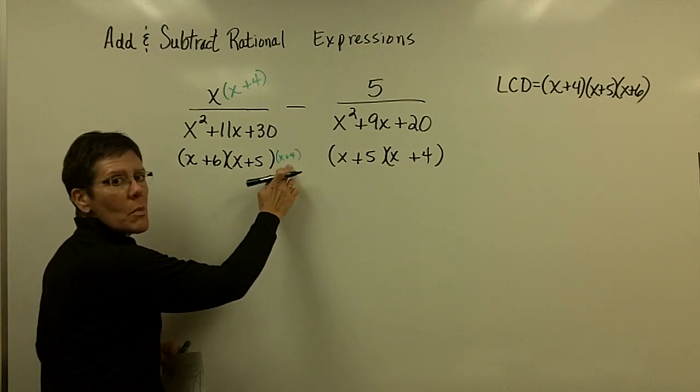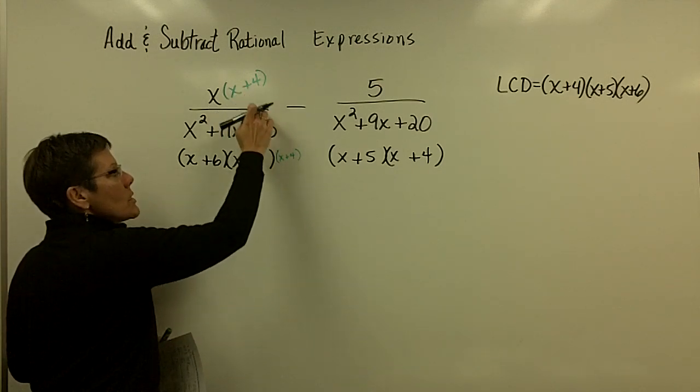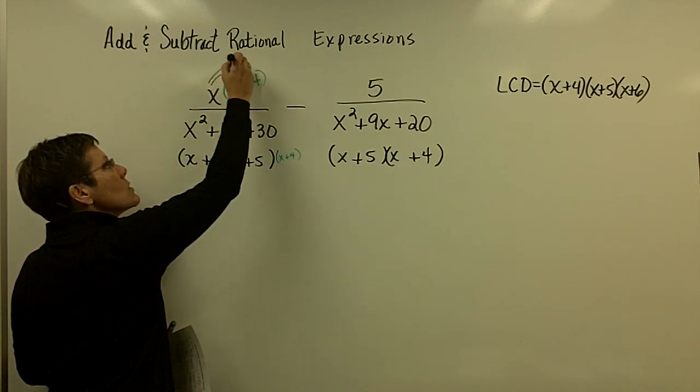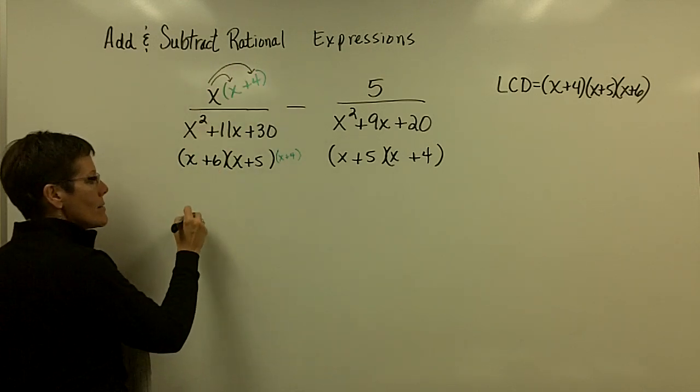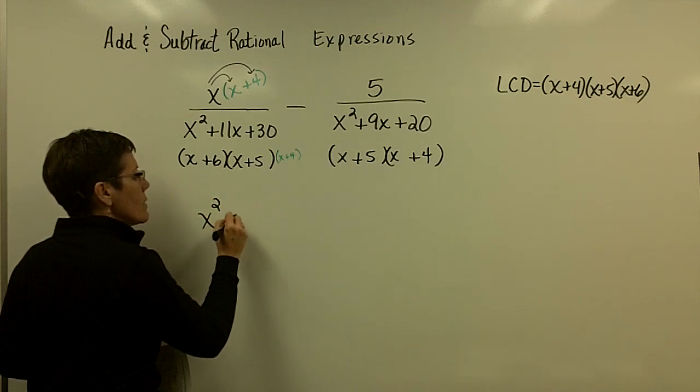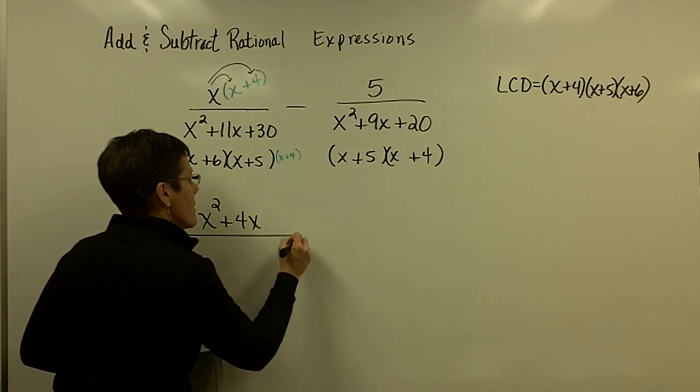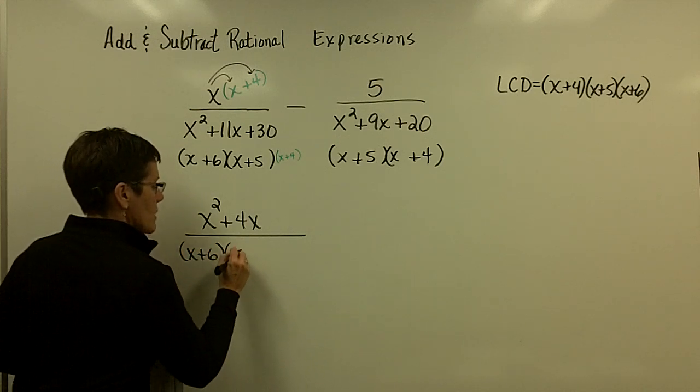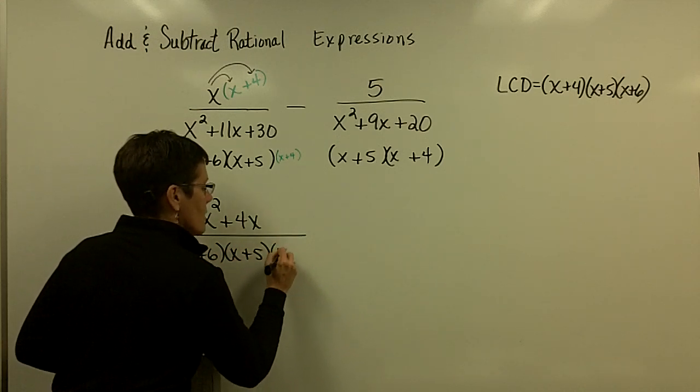I'm trying to show it really small here so I don't get tempted to cross those off. You're writing an equivalent fraction which is going to be x²+4x. x²+4x. And now, that denominator is the x+6. It's the x+5 and it's the x+4.